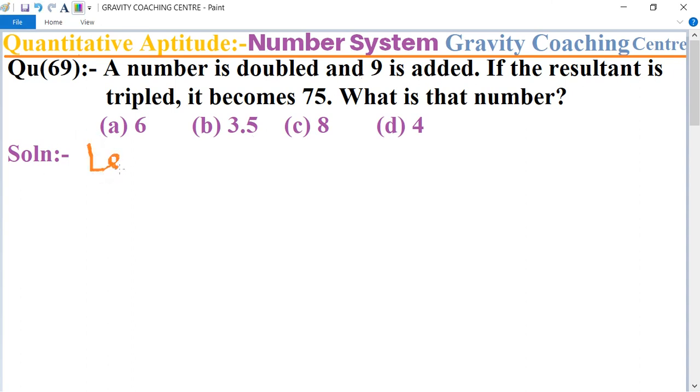In this question, first we let the required number be x. According to the question, a number is doubled so it will become 2x, and 9 is added.